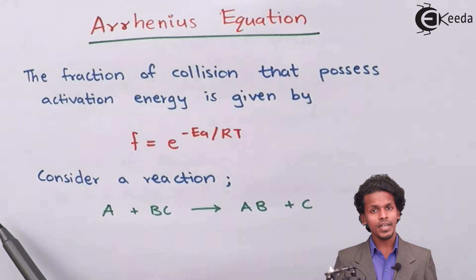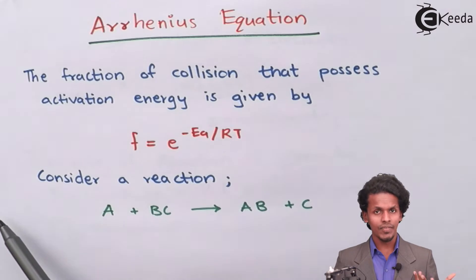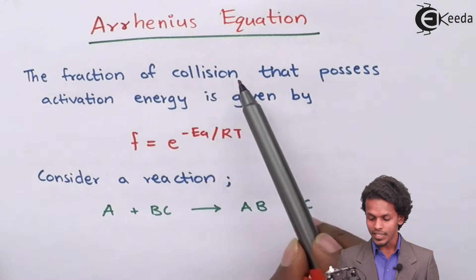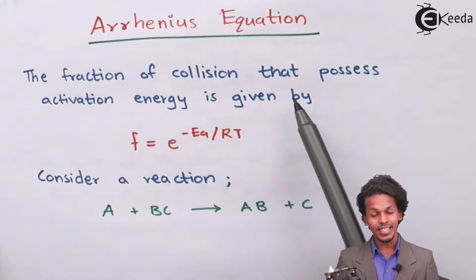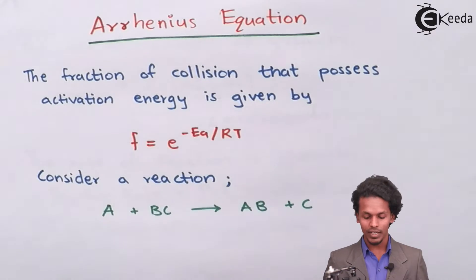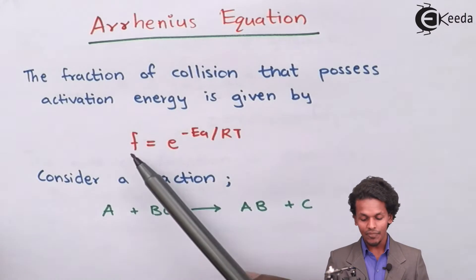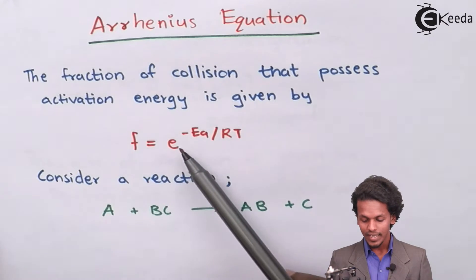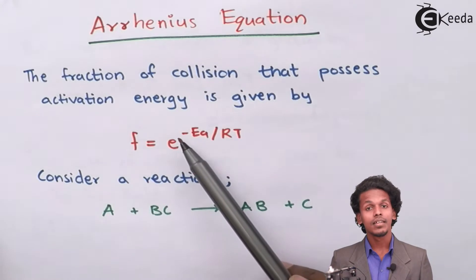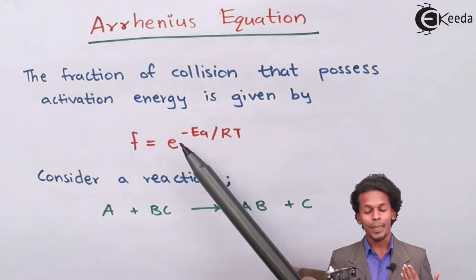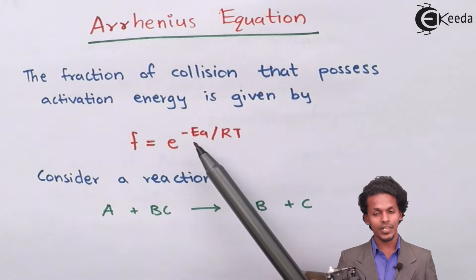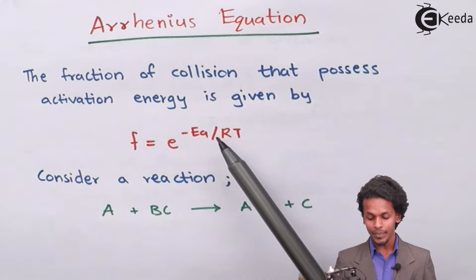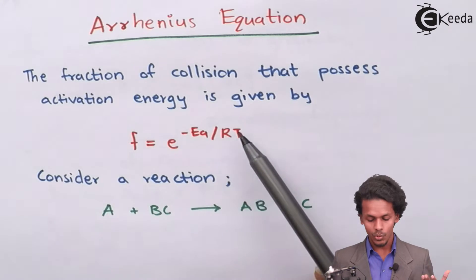The fraction of collisions that possess activation energy is given by the formula: F equals e raised to minus Ea divided by RT, where Ea is the energy of activation, R is the gas constant, and T is the temperature.